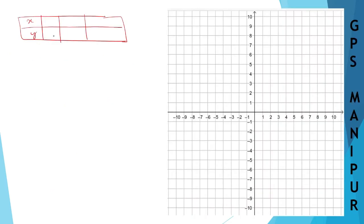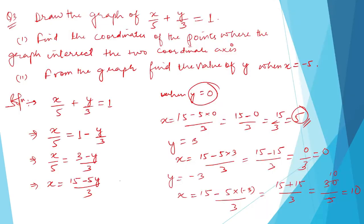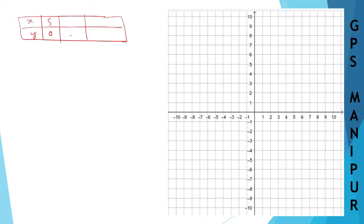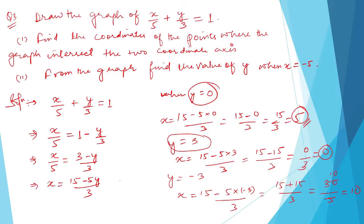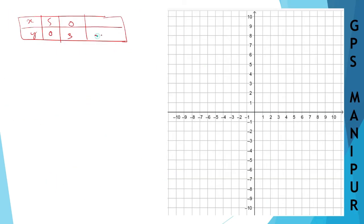So from the table: when y is 0, x is 5; when y is 3, x is 0; when y is minus 3, x is 10. Now let me draw the graph. This is the x-axis and this is the y-axis.